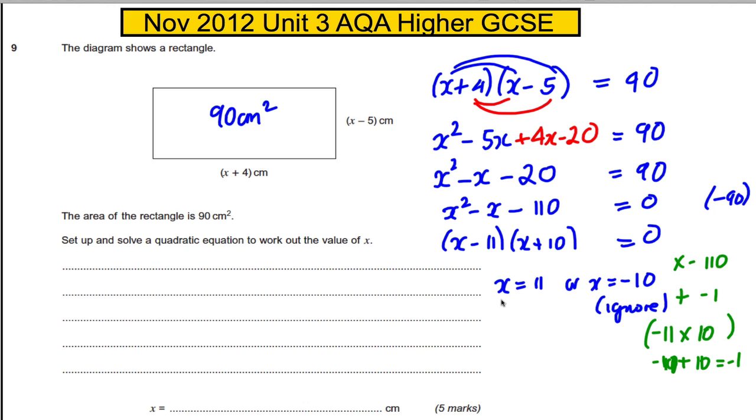Therefore our x is equal to 11. Now let's check it works. If x was 11, this thing here would be 15, and this thing here would be 11 subtract 5, which would be equal to 6, and 6 times 15 is indeed 90. We got it.